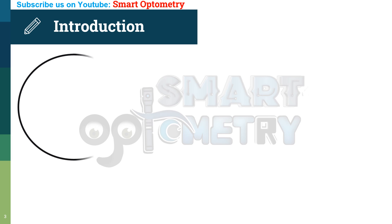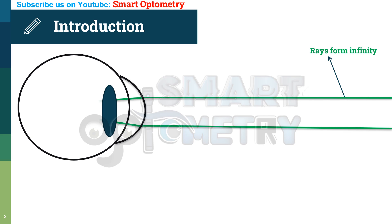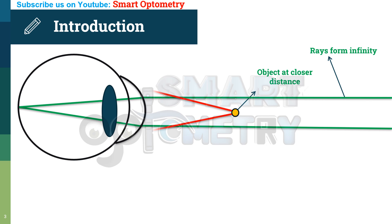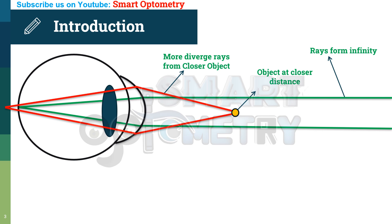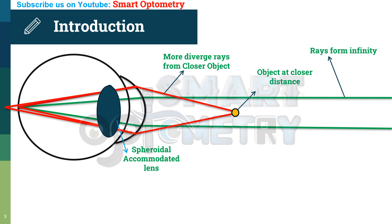In an emmetropic eye, rays coming from infinity focus on the retina and we see the object clearly. Now, if the object is brought closer to the eye, the divergence of rays from the object increases. If our eyes had a fixed power, rays would focus behind the retina and we would see the object blurred. But nature has given us a precious mechanism — accommodation — through which eyes can change the shape of the crystalline lens to increase the converging power and we can see objects clearly at closer distances.